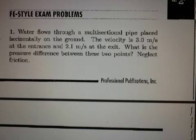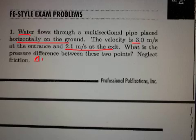Let's look at this problem together. We've got water flowing in a multi-sectional pipe, placed horizontally on the ground. It gives you the initial velocity and the final velocity at the exit, and it's asking for the pressure difference — the delta P — between these two different points. You can neglect friction.